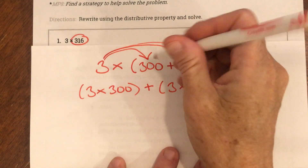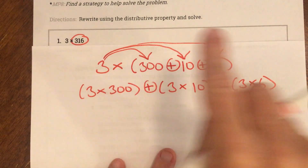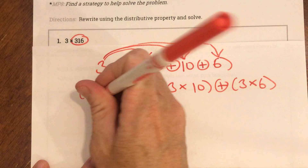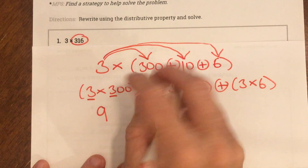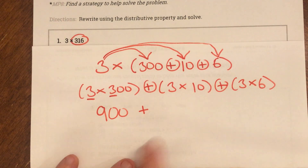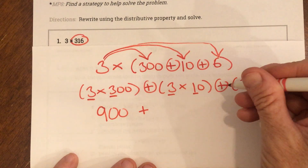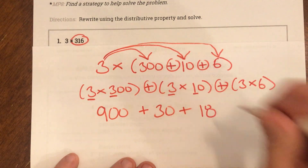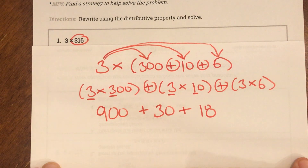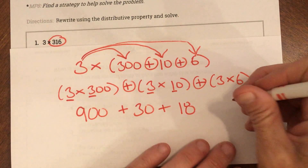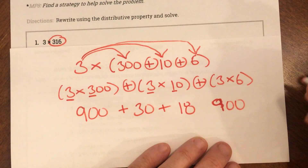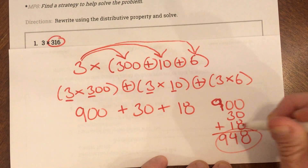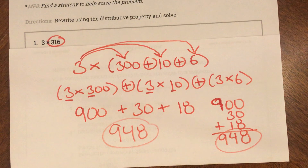So that gives us 3 times 300 plus 3 times 10 plus 3 times 6. Step 4 is to solve those and then add them. Using the shortcut: 3 times 3 is 9, add two zeros — 900; 3 times 10 is 30; 3 times 6 is 18. Those are my partial products. I'll write them vertically to add more easily, and I get 948 as my answer.